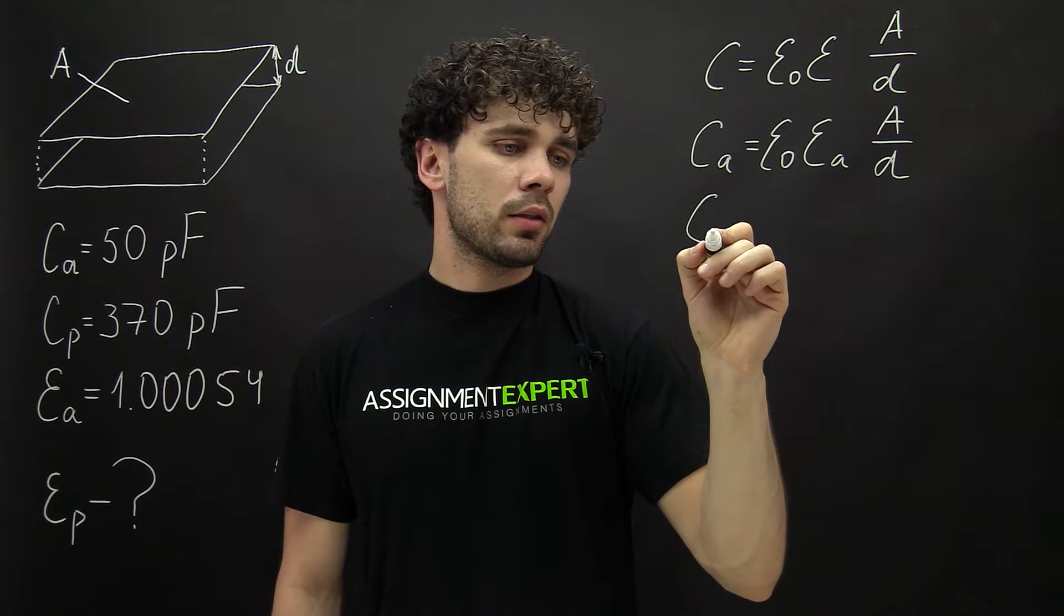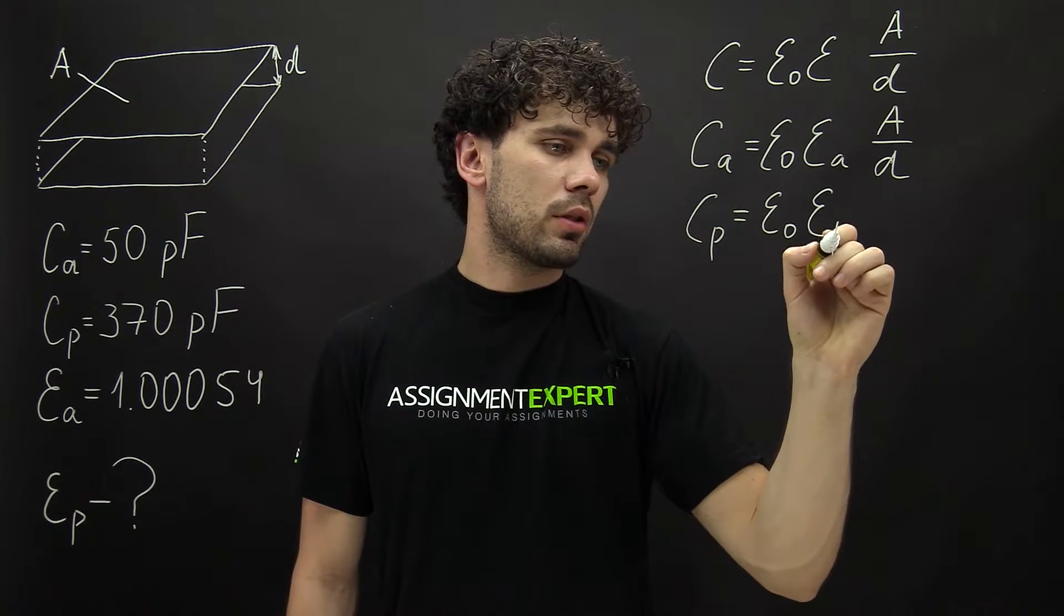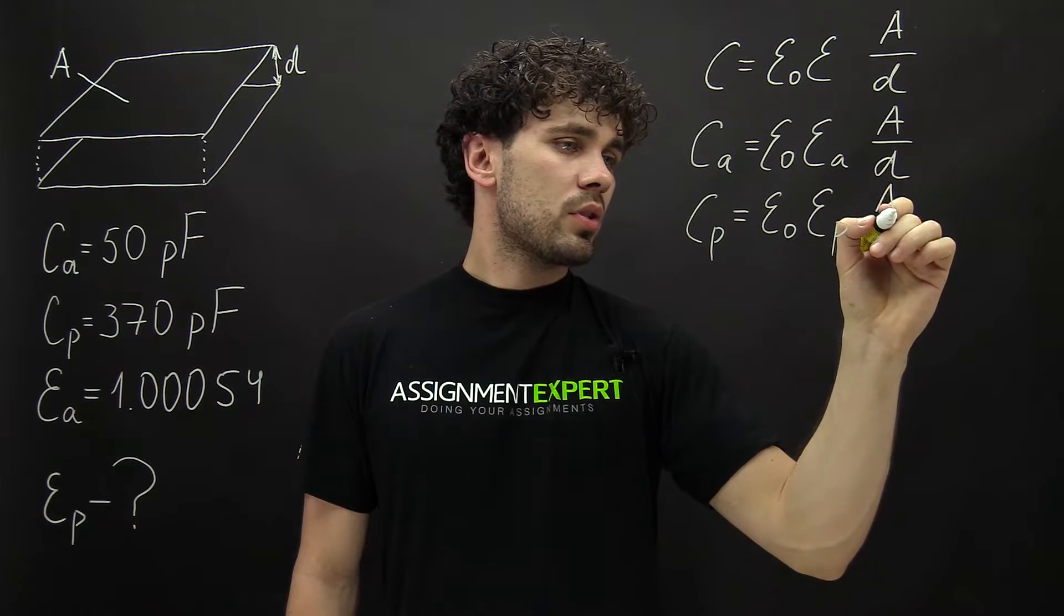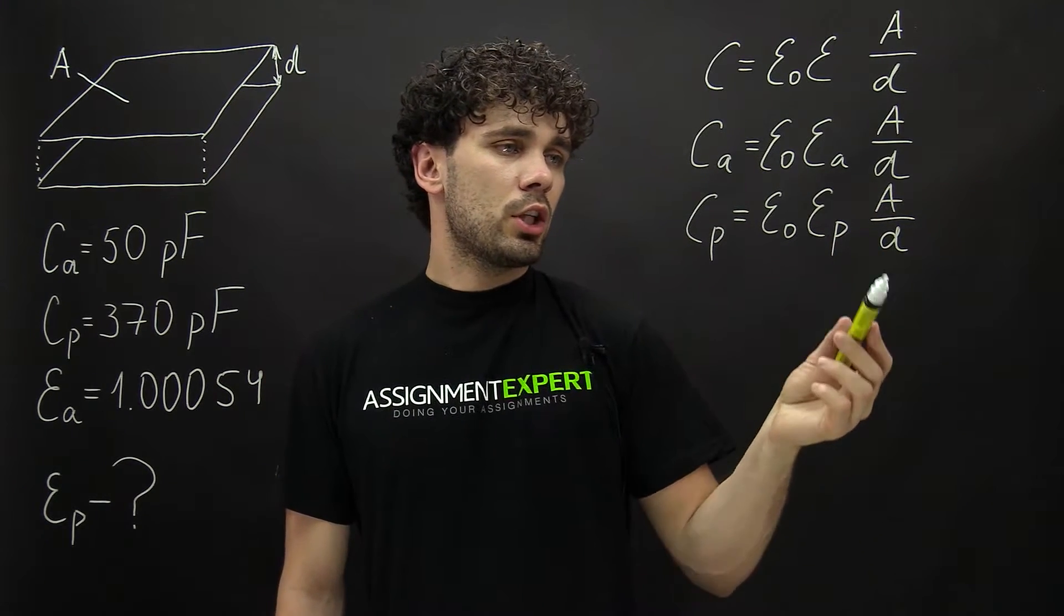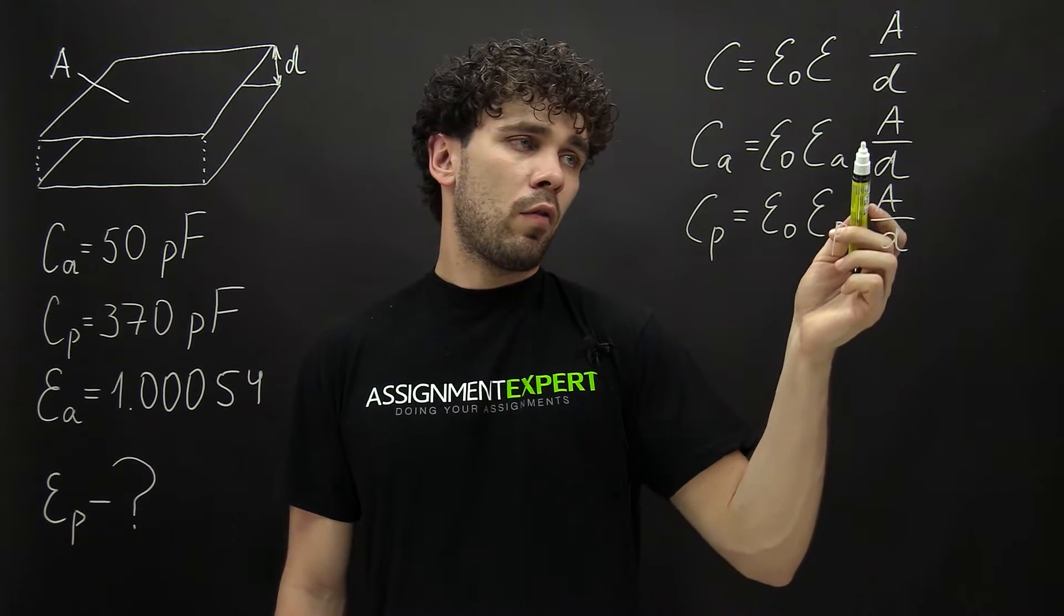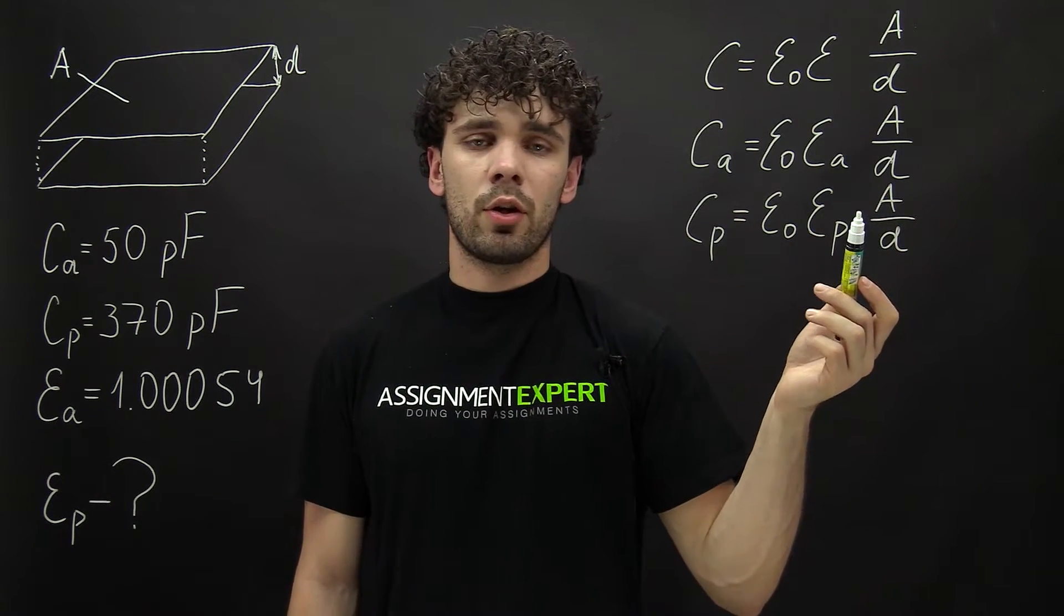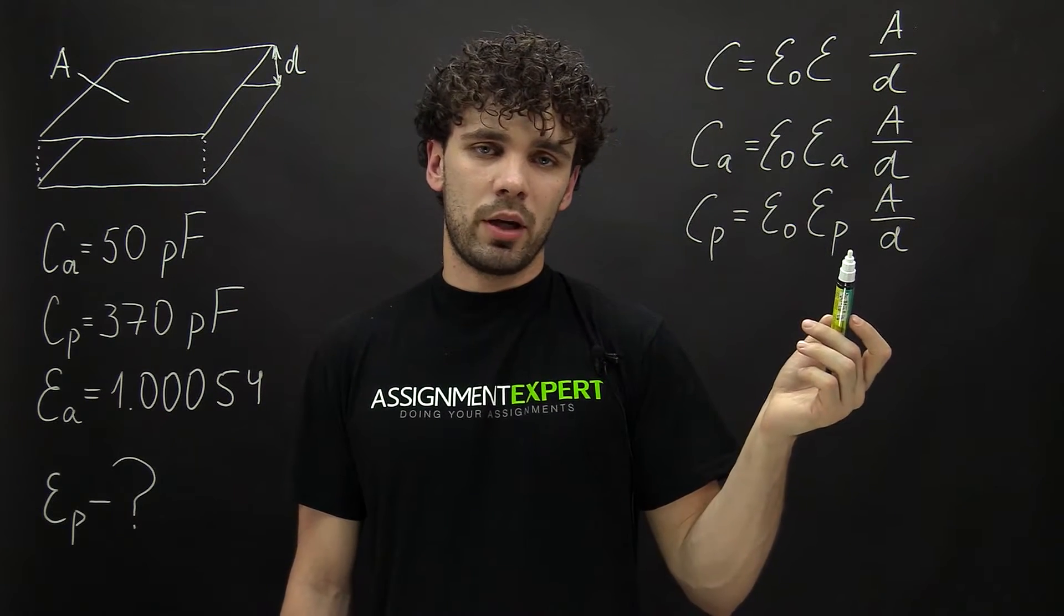And for plastic, C_P equals ε0 times ε_P times A over D. So the main difference here is the permittivity of air and of the plastic. Obviously, we have the same capacitor in both cases, so A and D are equal, as is the permittivity of free space.